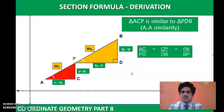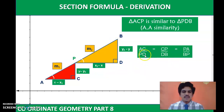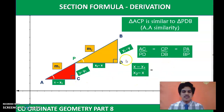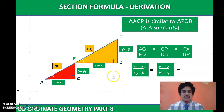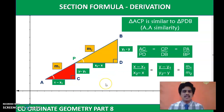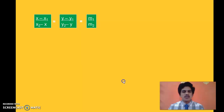Since the triangles are similar, corresponding sides are in the same ratio: AC by PD equals CP by DB equals AP by BP. Substituting, AC by PD is (x minus x1) by (x2 minus x), CP by DB is (y minus y1) by (y2 minus y), and AP by BP is m1 by m2. So we have: (x minus x1)/(x2 minus x) = (y minus y1)/(y2 minus y) = m1/m2. This is the heart of this derivation — the remaining part is straightforward algebra.